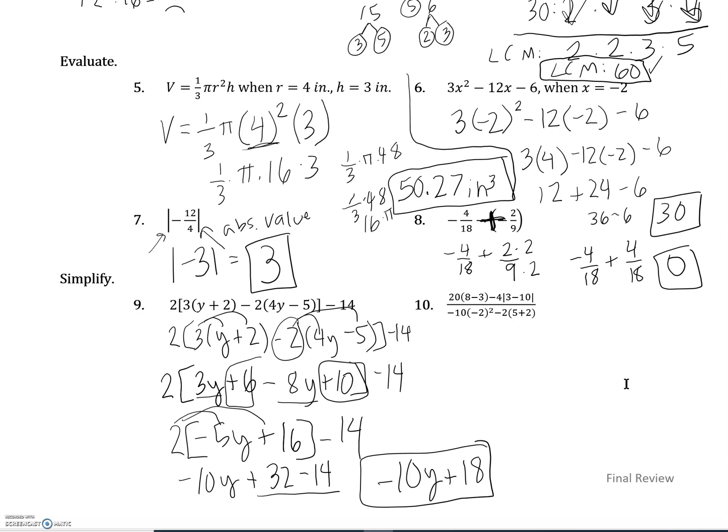Number 10, this is the final problem for chapter R and chapter one review. So here again I have those absolute value symbols. I'll use those in a minute, but all the other ones are just plain old parentheses. So let's start with what's inside the parentheses: 20 times 8 minus 3 is 5. Negative 4, again inside my absolute value, I'm going to simplify inside there as well. 3 minus 10 is negative 7 over negative 10. And I have exponents down here on the bottom: negative 2 times negative 2 is positive 4, minus 2 times 5 plus 2, which is positive 7.